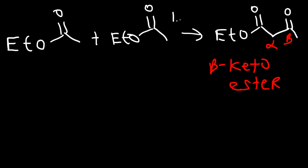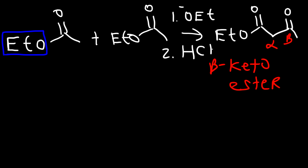In the first step we need to use a strong base, ideally ethoxide because it needs to match. The second thing we need to do is acidify the solution either with H3O+ or HCl. So let's go over the mechanism of the Claisen condensation reaction.